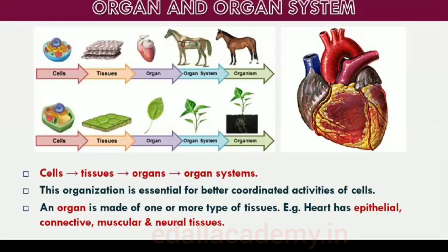The body of a simple organism like hydra is made of different types of cells and the number of cells in each type can be in thousands. The human body is composed of billions of cells to perform various functions. In multicellular animals, a group of similar cells along with intercellular substances perform a specific function. Such an organization is called tissue.